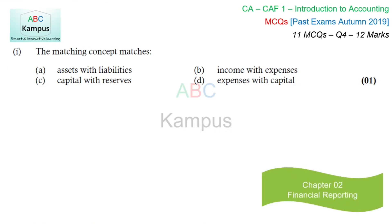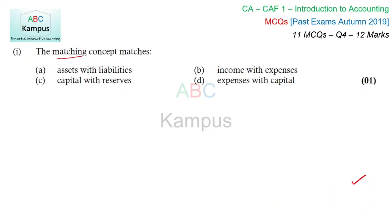First question is from Chapter 2, Financial Reporting. The concept is: what does the matching concept match? The matching concept matches income and expenses. So option B would be correct.